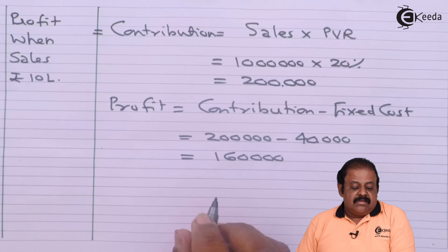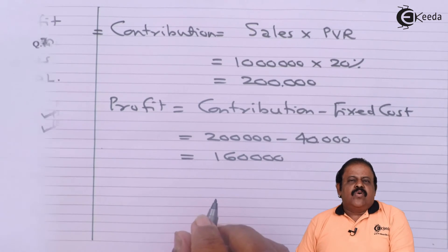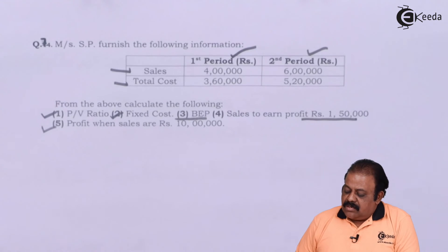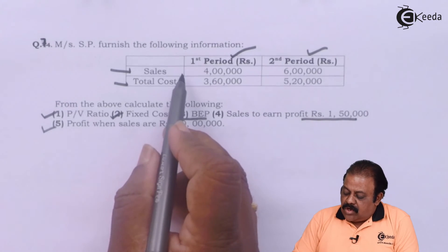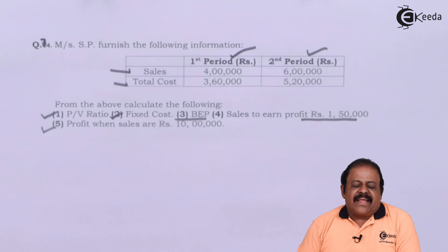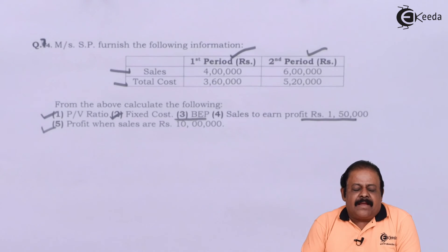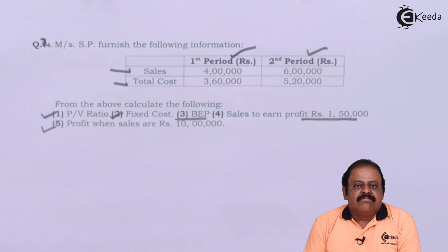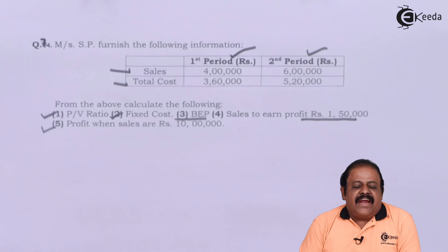So when a question gives total cost and sales, by calculating profit we can derive various items like break-even point, PV ratio, and more. Thanks for watching this video — stay tuned with Ikida and subscribe to our channel.